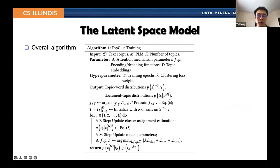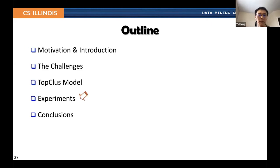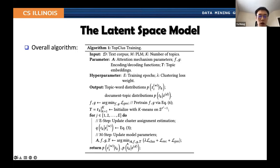The overall algorithm first uses pre-training to initialize the latent space mapping modules, instantiated as autoencoder structures. Then we initialize topic clusters in the latent space, and iteratively go through E-steps and M-steps to update cluster assignments and model parameters. Our model is able to derive both topic word distributions and document topic distributions, as topic models can.